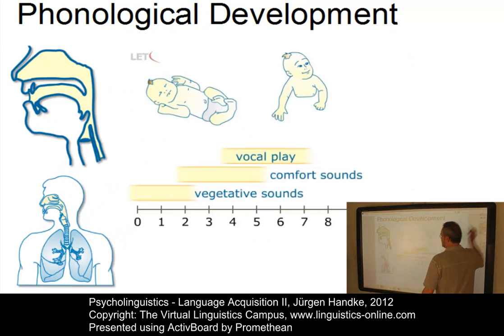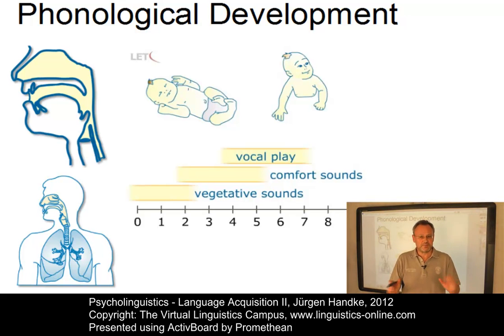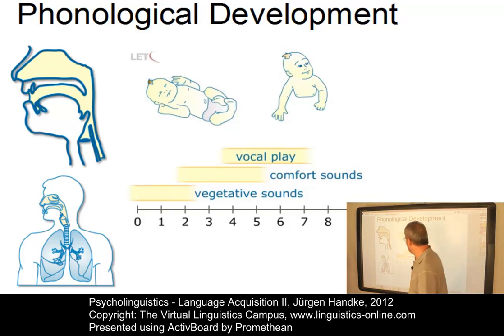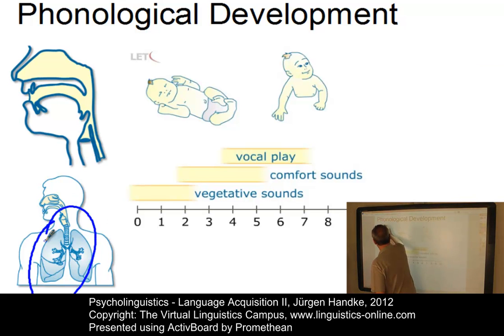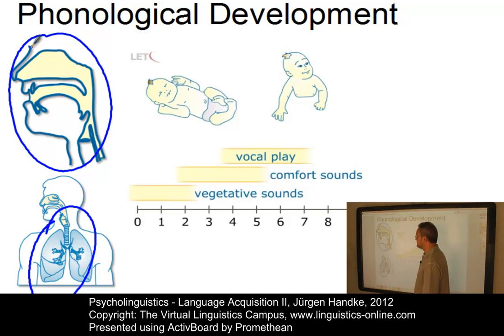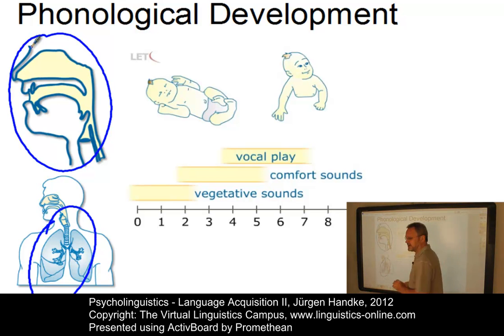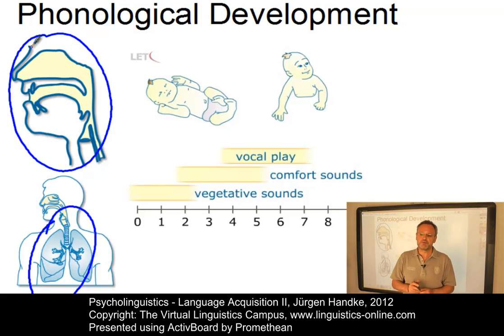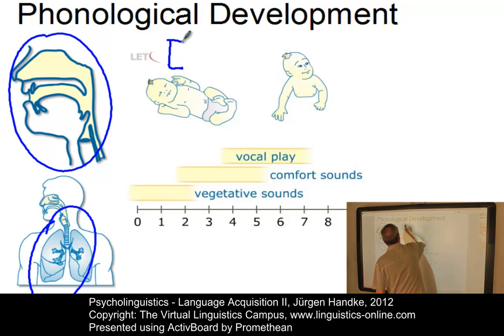Let's look at phonological development first. Language development begins with the acquisition of the language's sound pattern. During the first year of life, children achieve control of the speech organs, so control of the lungs and the vocal tract. And they develop a sensitivity to the phonetic distinctions used in the target language, starting out with the innate ability to hear virtually every phonetic contrast used by human languages — for example, the difference between voiceless and voiced pairs such as 'bar' versus 'par'.